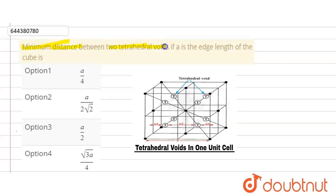two tetrahedral voids, if a is the edge length of the cube. We have given the options.